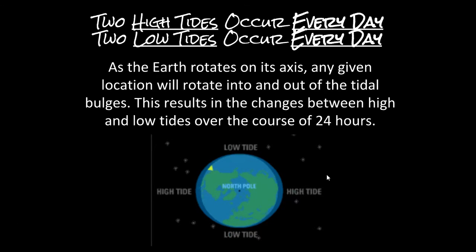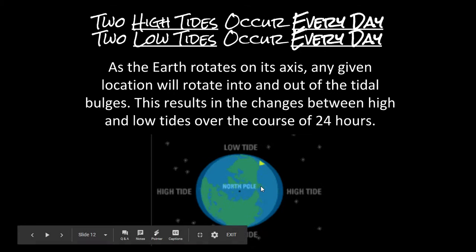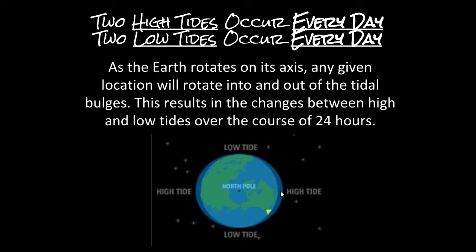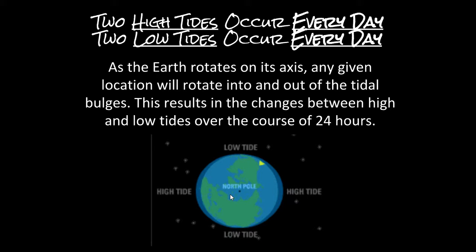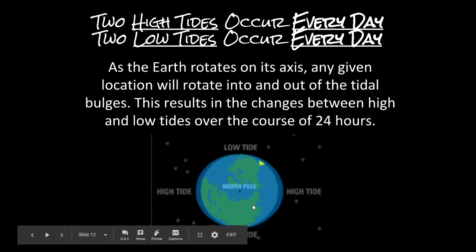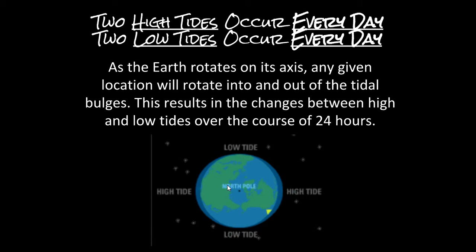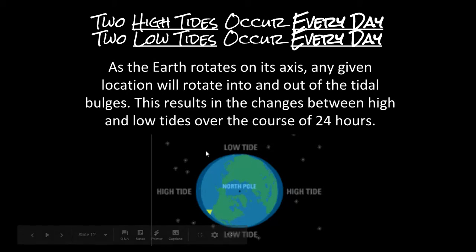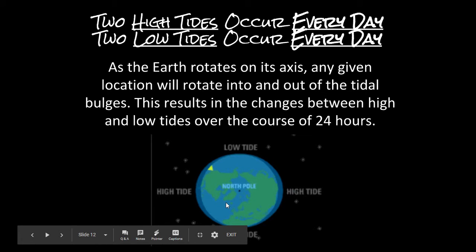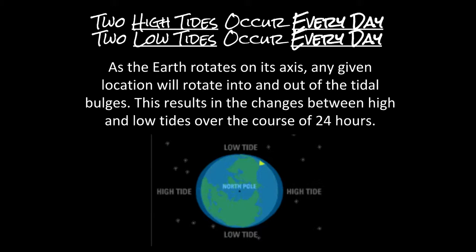One important detail: we experience two high tides and two low tides every single day, regardless of the position of the Moon or Sun. How extreme these tides are does depend on where the Earth, Moon, and Sun are. But every day we rotate into two high tides and two low tides. When we start analyzing Moon phases and the Moon's orbit around the Earth, you'll see more extreme or less extreme tides depending on position, but we always experience two of each every single day.